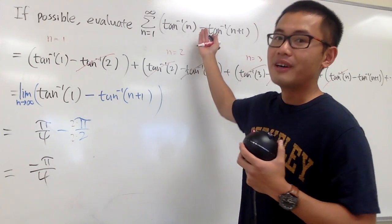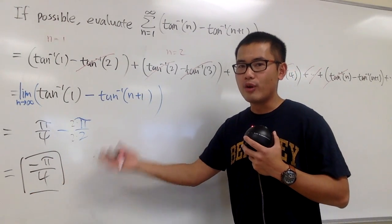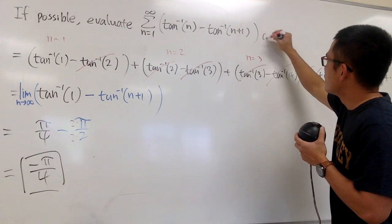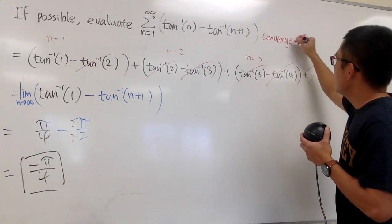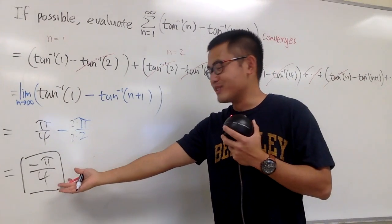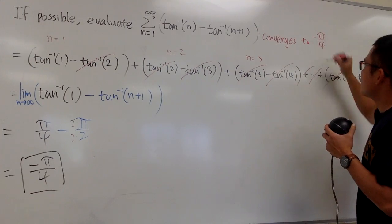Therefore, this right here converges. And it converges to negative pi over 4. Once again, let me just write this down right here for you guys. This right here, it converges, and the reason is because we find the value for the convergence. This converges to negative pi over 4.